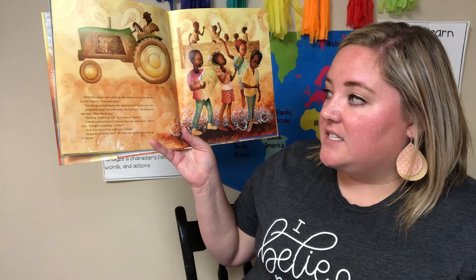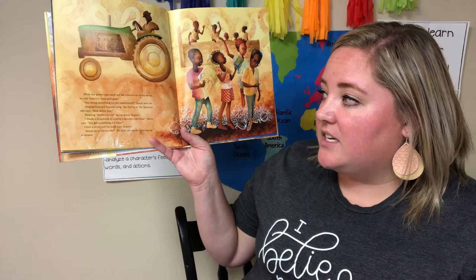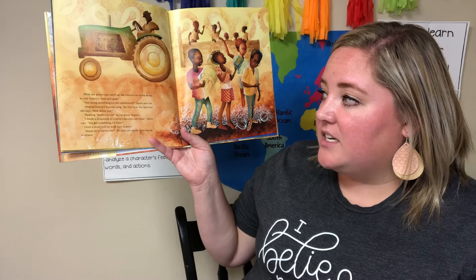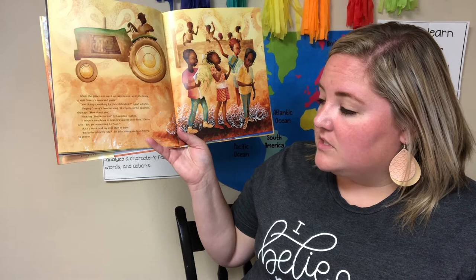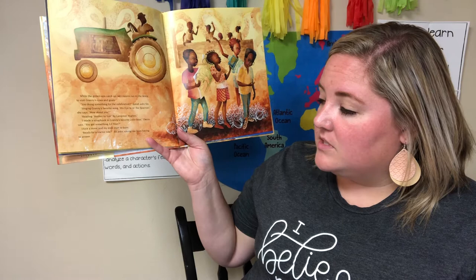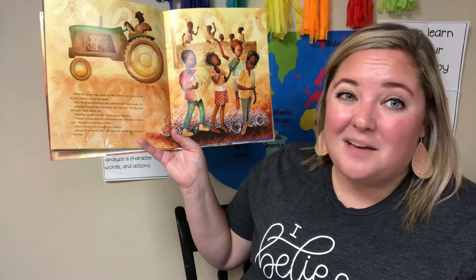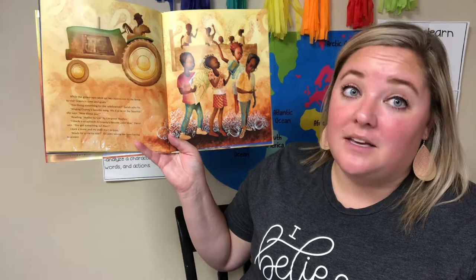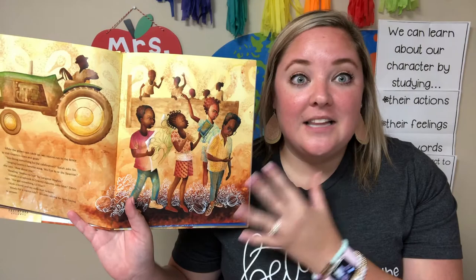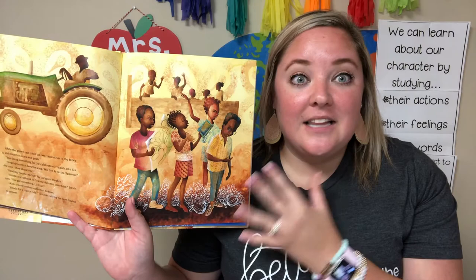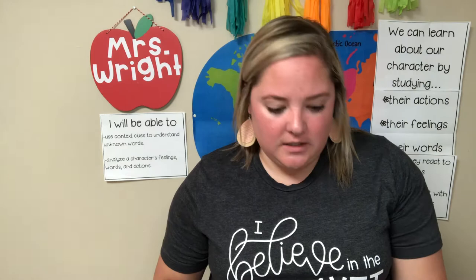While the grownups catch up, we cousins run to the fence to visit Granny's cows and goats. 'You doing something for the celebration?' Isaiah asks. 'Singing Granny's favorite song, His Eye Is on the Sparrow,' she says. 'Reading Mother to Son by Langston Hughes.' 'I made a scrapbook in Granny's favorite color, blue,' Devin says. 'You got something, little Allen?' I kick a stone and my eyes start to burn — that means he's like going to cry. Sis asks, 'Ready for a tractor ride?' saving me from having to answer. He's happy to be here, but he went from excited to sad because he doesn't know what he's going to do for Granny.